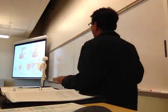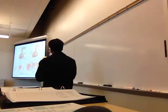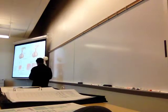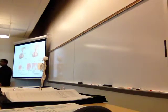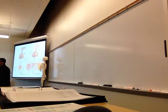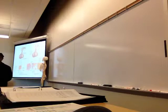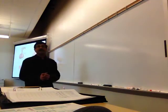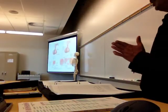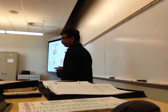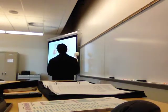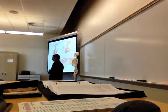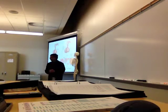We stop here in last class and will start from here. The follicular growth, maturation, ovulation, and rupture of the follicle — those are controlled by a number of hormones. So the growth, maturation, and rupture of the follicles are all controlled by hormones. We will see how hormones control those things.